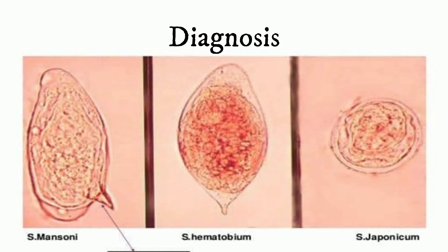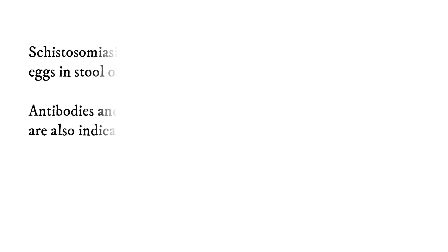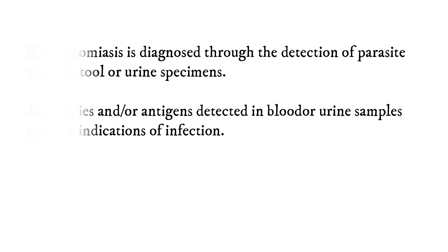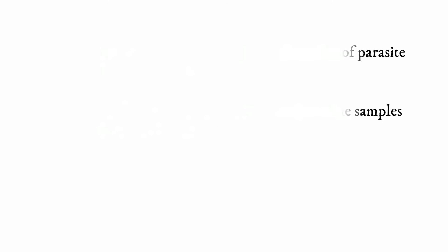Moving on to diagnosis. Schistosomiasis can be diagnosed through the detection of parasite eggs in stool or urine specimens. Antibodies and/or antigens detected in blood or urine samples are also indications of infection.